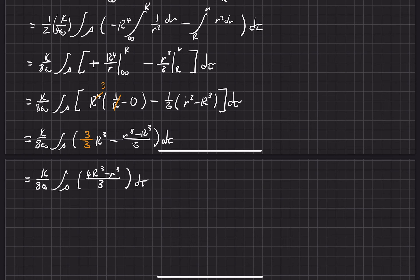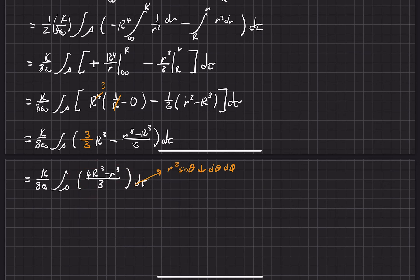Now we look at the outer integral. The dτ in spherical coordinates is r² sinθ dr dθ dφ — our standard spherical coordinates differential element. We integrate over the entire span. Since there's no θ or φ in the integrand, that angular integral is just 4π. You can verify by taking the integral from 0 to 2π for φ, and 0 to π for θ with sinθ — it ends up being 4π.